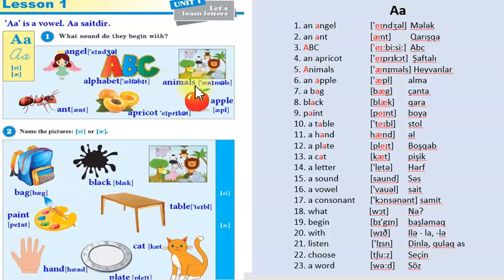Two: name the pictures. A or ə deməliyik. Yəni bu sözlərdə A hərfi yəni, A hərfi ey səsini verir, buxda isə ə səsini verir. Bag - ə, black - ə, table - ey, animals - ə.